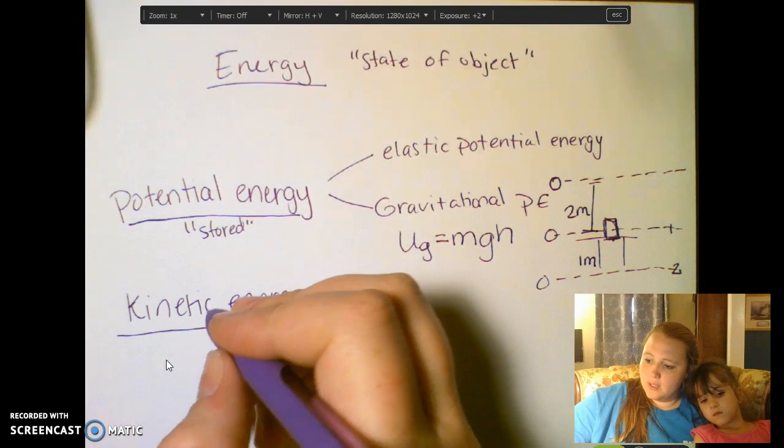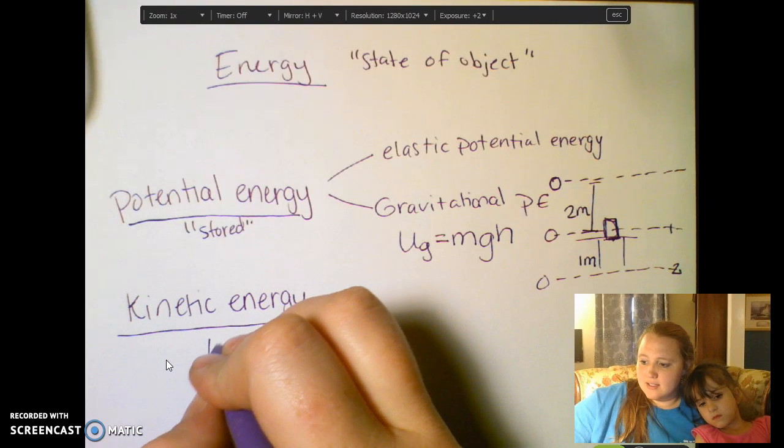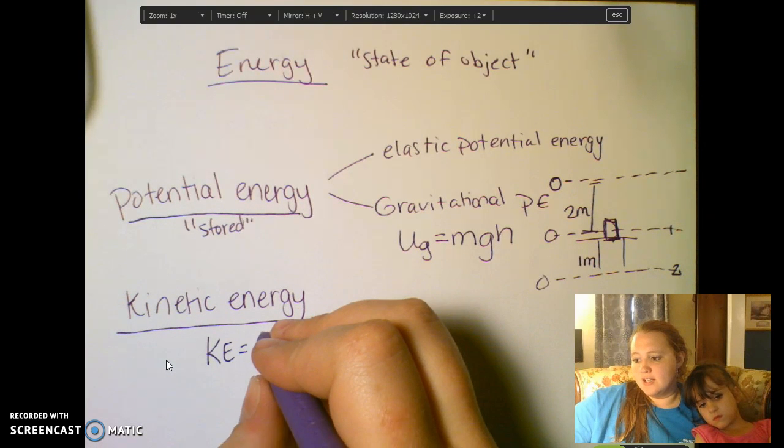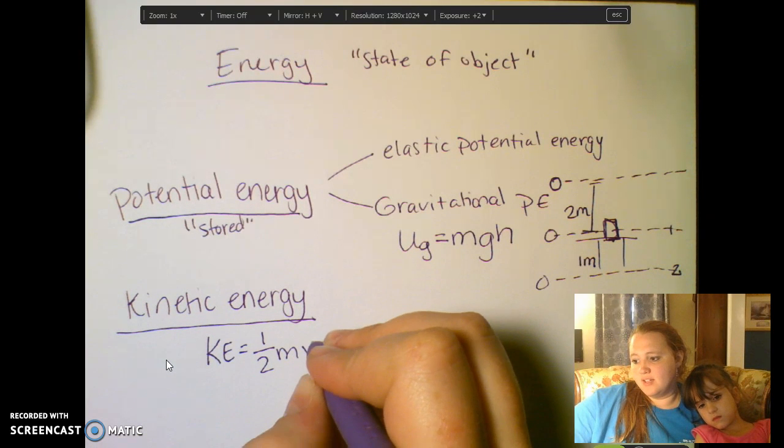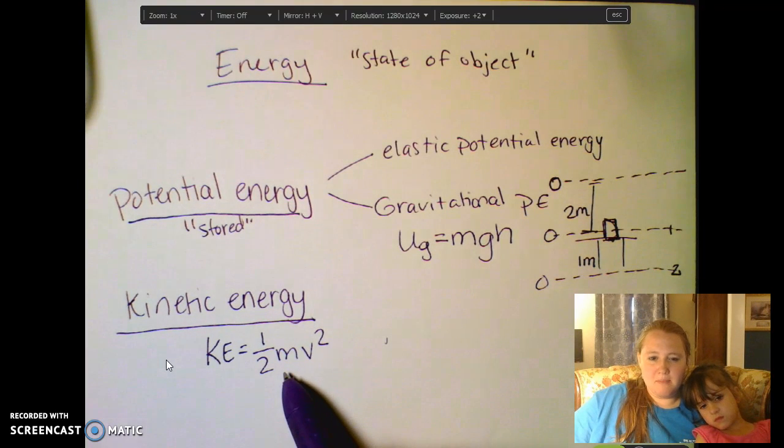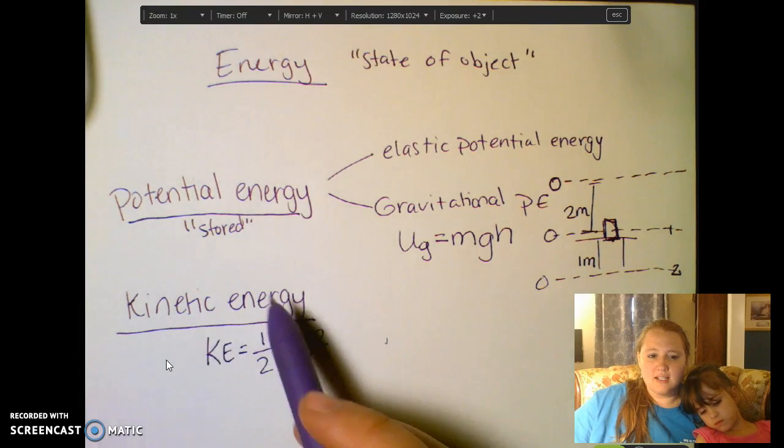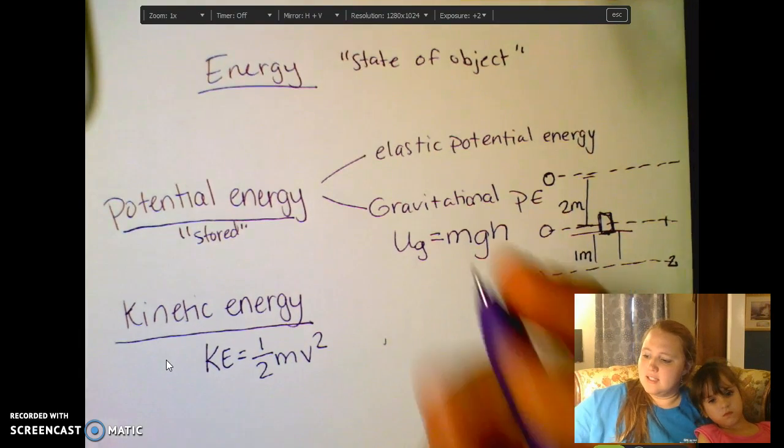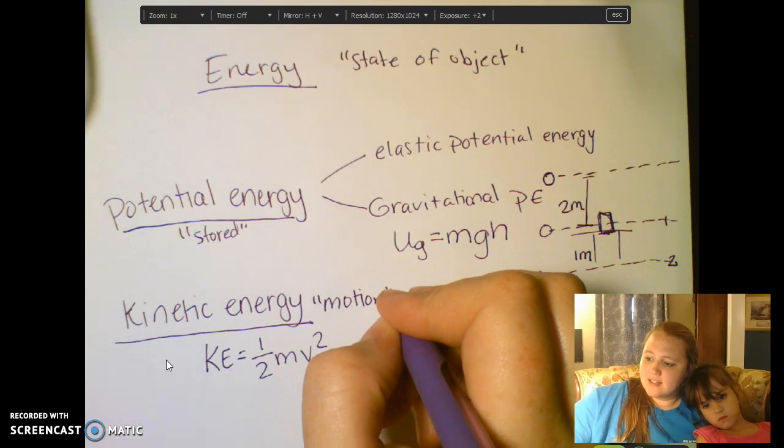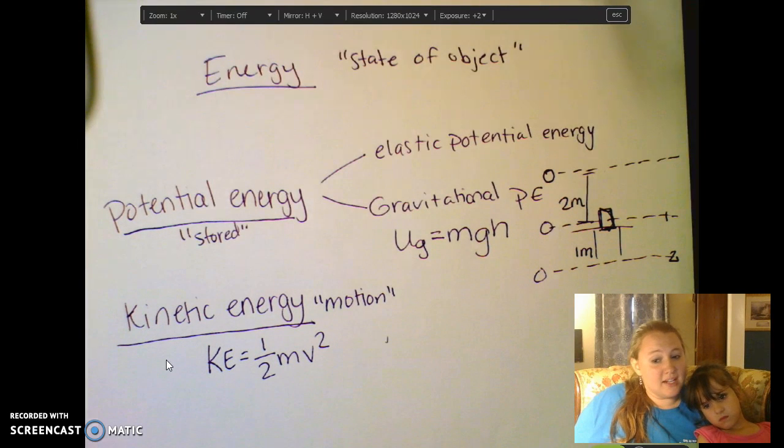So kinetic energy, we write as KE, and that is given as one-half mv squared. Now v of course is our velocity, m is our mass, and kinetic energy, since it has velocity in it, is the energy of motion. So anytime something has a velocity at all, it's going to have kinetic energy.